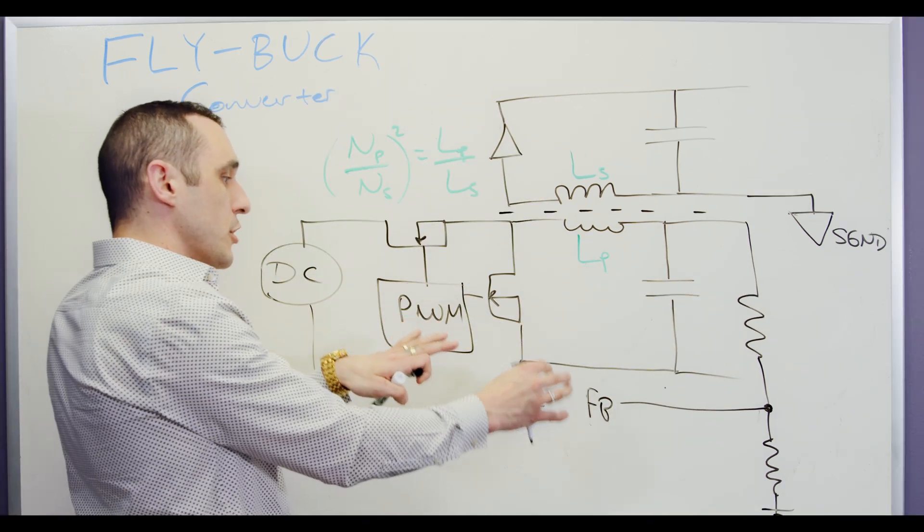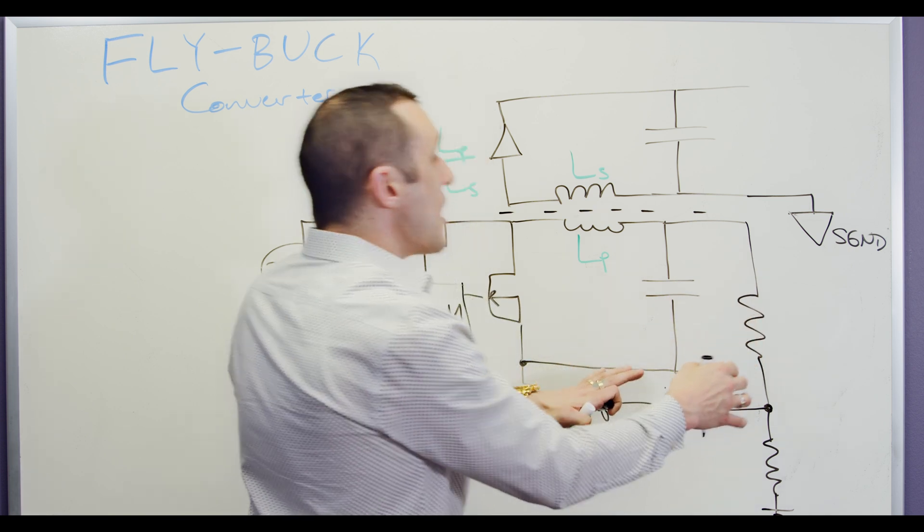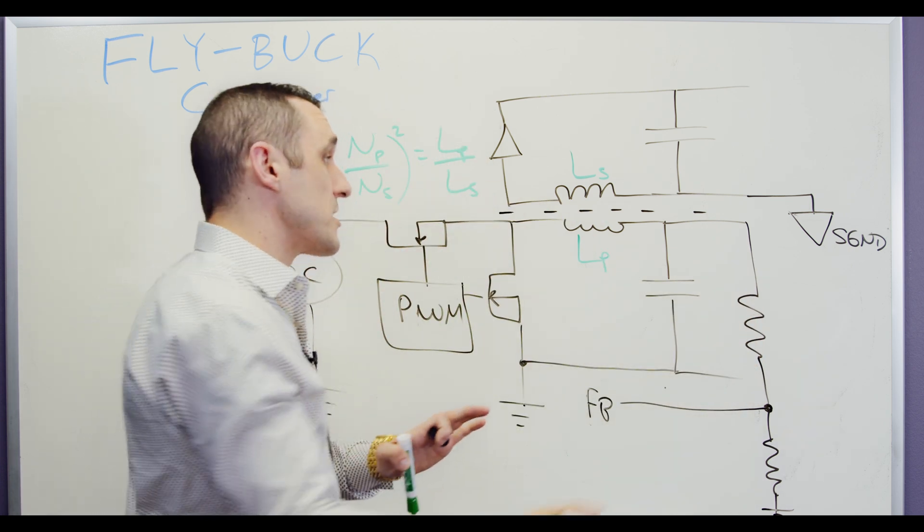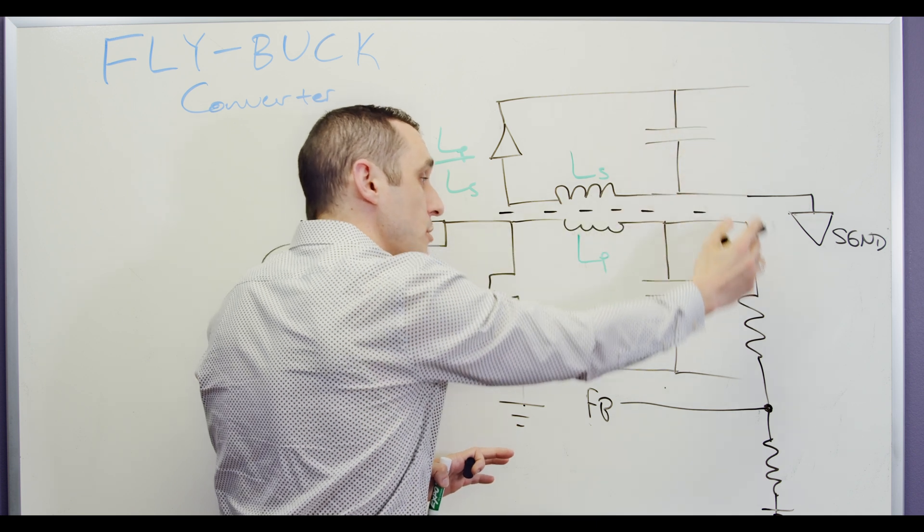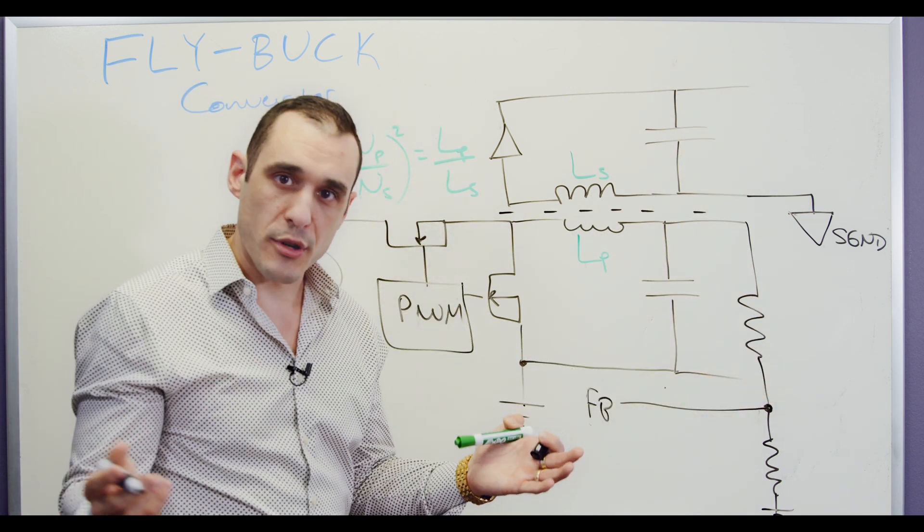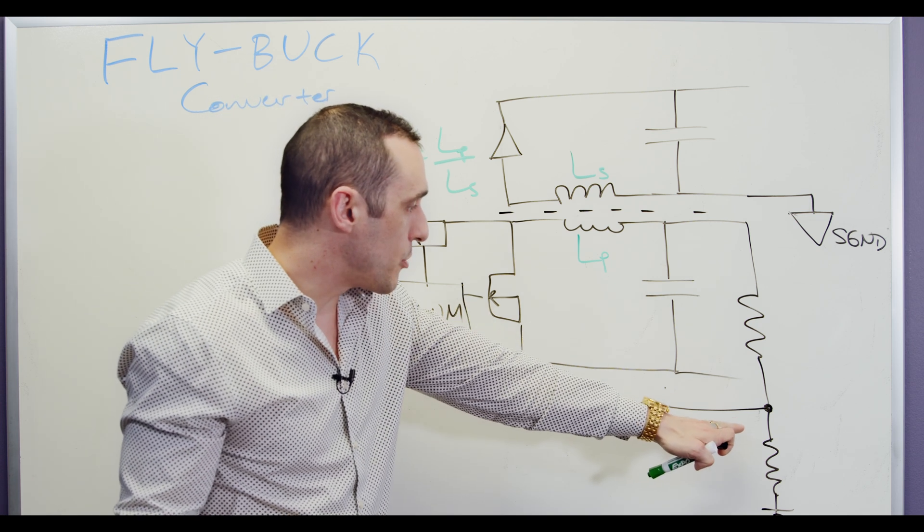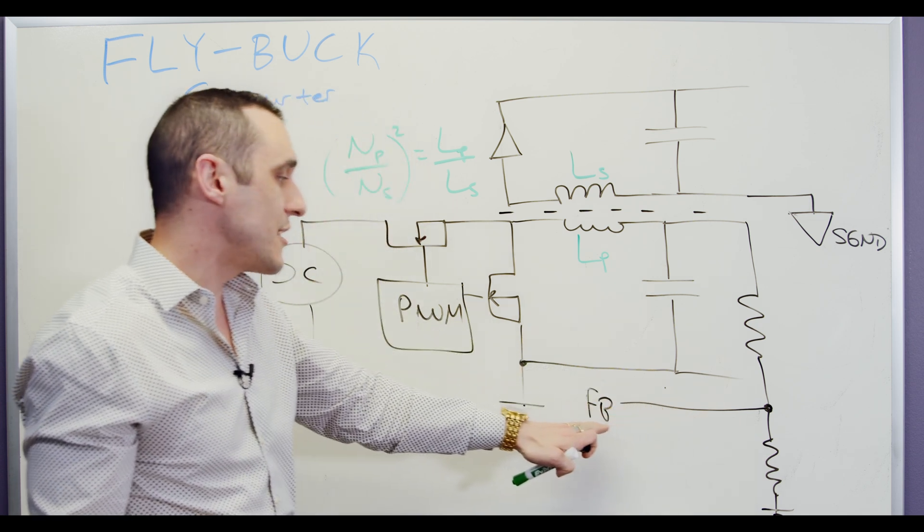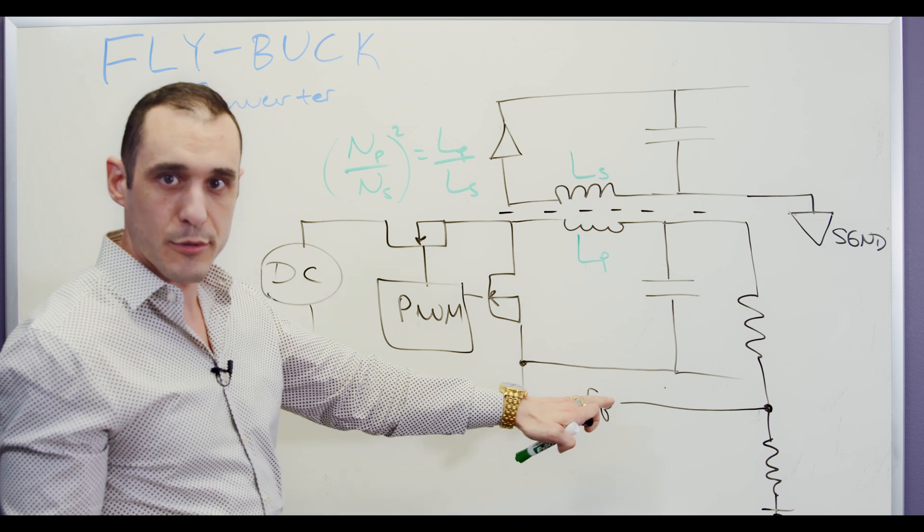With this type of converter, I think it's best to just do it from the primary side. You could theoretically do it from the secondary side, and then you would bias an optocoupler to get this signal back over here, but you don't have to do it. Just do the simple thing, get your output voltage measurement on the primary side and use that for feedback and stable regulation.